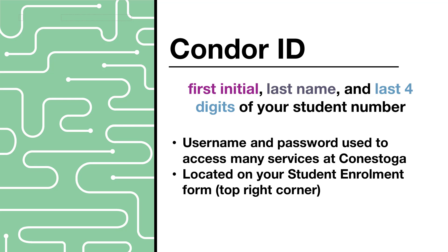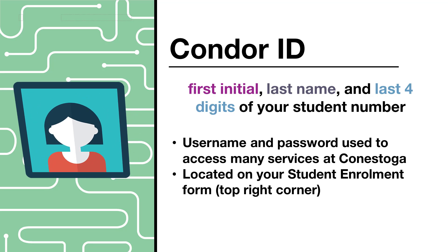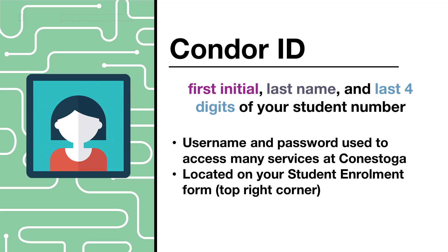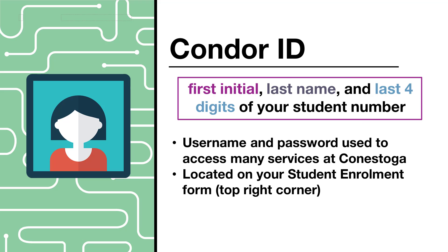Now that you have completed the Windows 10 walkthrough, let's talk about some Conestoga-specific tech settings and services. Your Condor ID, also known as your Conestoga username and password, are your universal sign-in for all Conestoga services and portals. Your Condor ID is composed of your first initial, last name, and the last four digits of your student ID number. You can also find it in the top right corner of your student enrollment form.